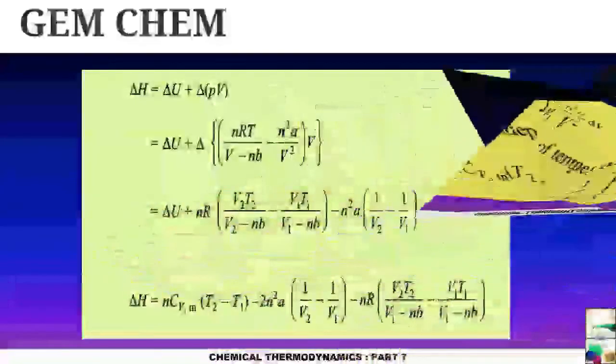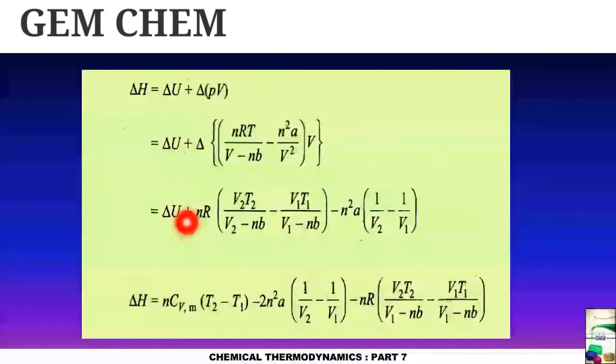Now we will see the expression for delta H. Just we substitute the value of delta U and delta pV. That is, p value is kept here and delta U value is being given here from the previous expression, and ultimately delta H value is being obtained. So these were the important derivations for the Van der Waals gases.